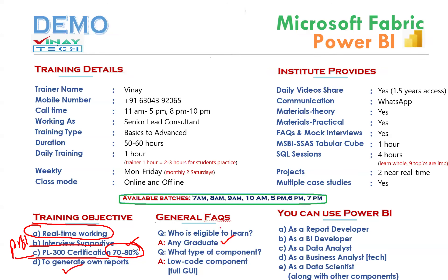Any graduate can learn Power BI. What type of component is it? It is a low-code component with full support for graphical operations. Not no-code — low code, meaning less code. The code used is DAX language — Data Analysis Expressions — which is a special language close to Excel functions. No corporate company can give you a formula for your company operations, so you need to write your own formulas, which is why these functions are helpful. Since we use it sometimes, we call it low code; otherwise it is essentially no code.